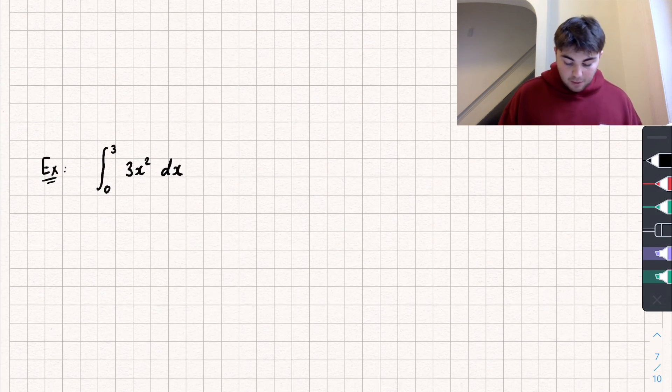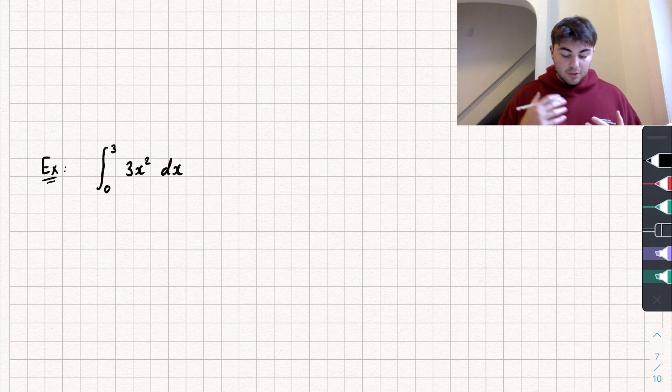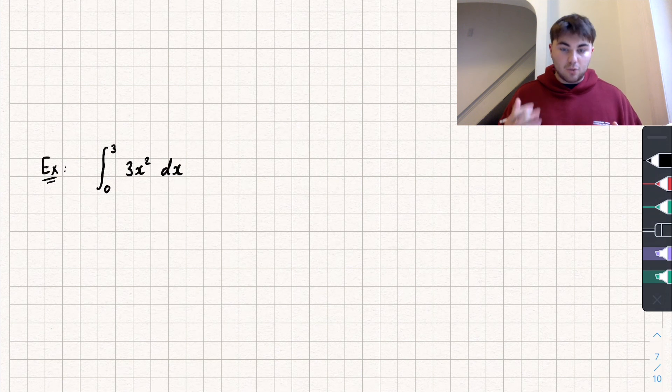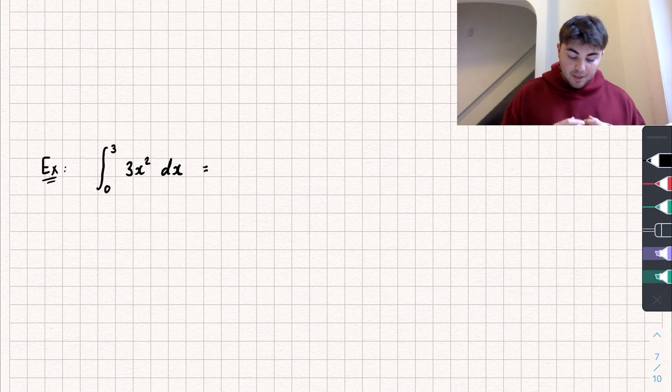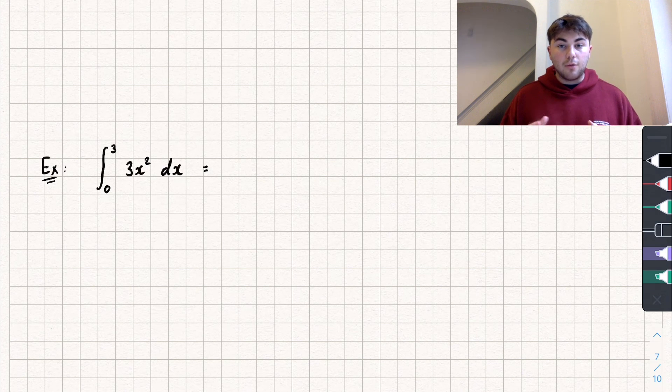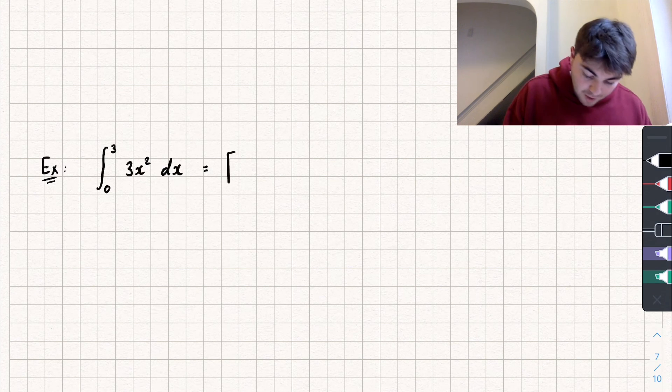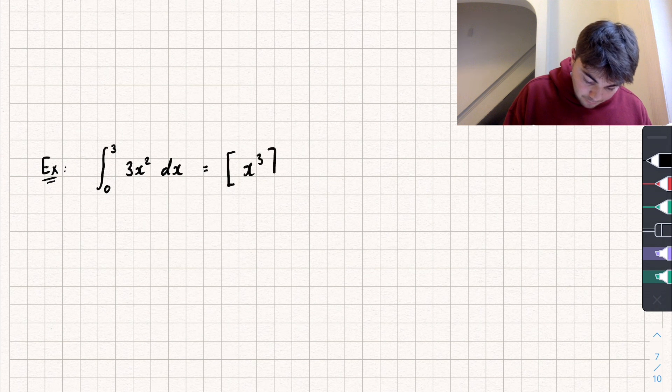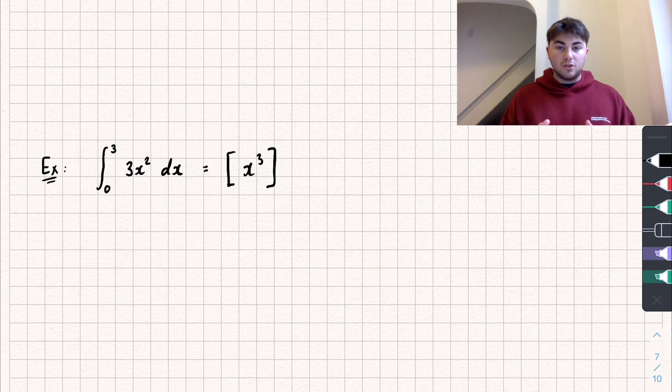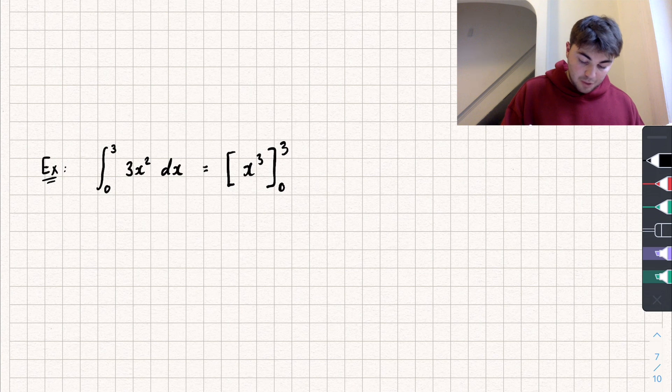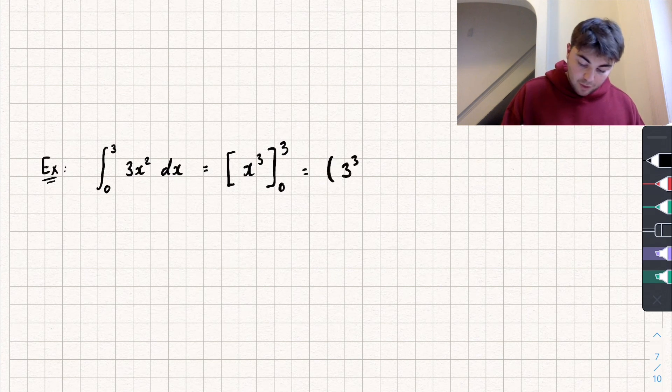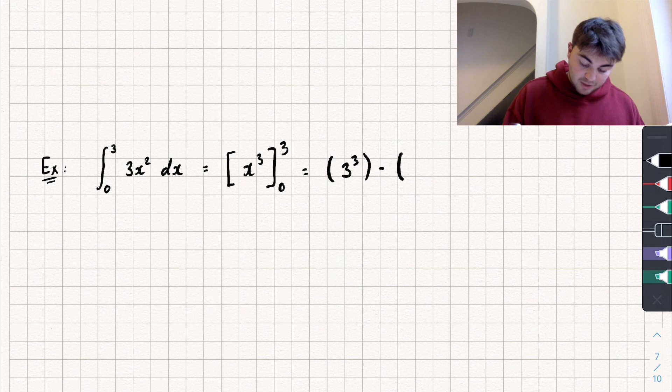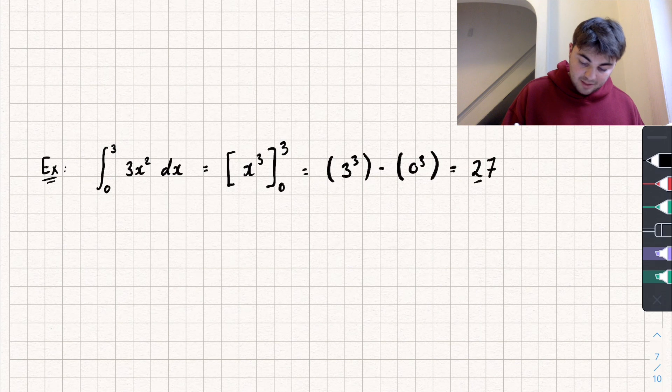So let's take a look at one more example. We're integrating between zero and three, 3x squared. So we're going to add one to the power, divide by the power, so we're going to be left with 3x cubed divided by 3 which is just x cubed. And remember our square brackets. And we don't need our constant of integration because we're integrating between zero and three. So now I'm going to substitute in 3 for x and we get 3 cubed and I'm going to subtract when I substitute in zero, zero cubed. And so my answer is 27.